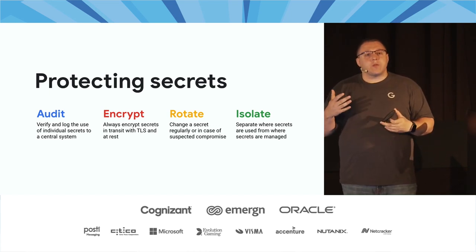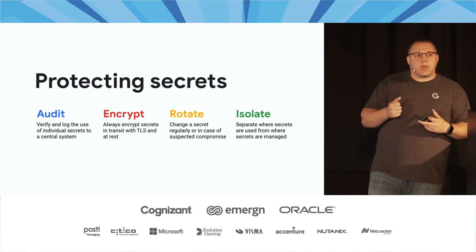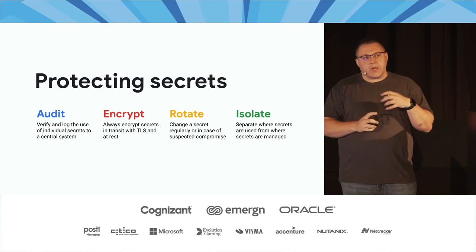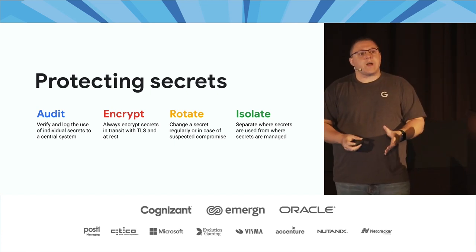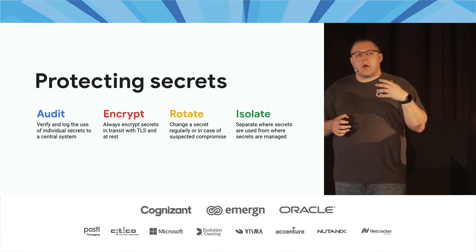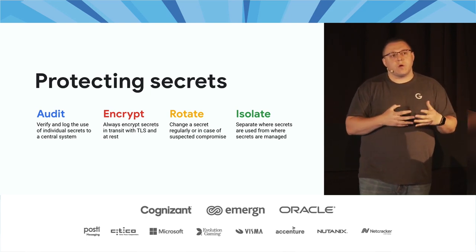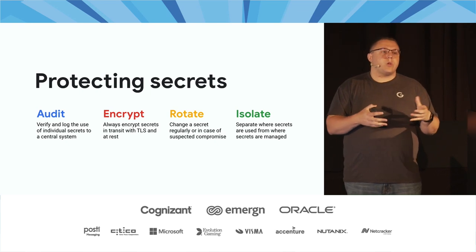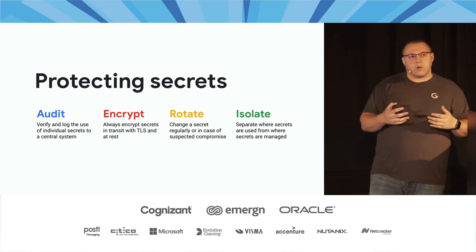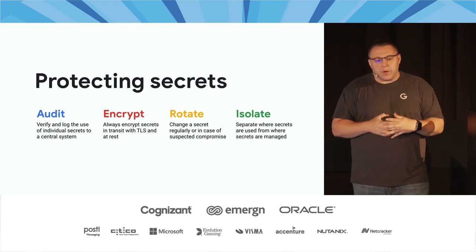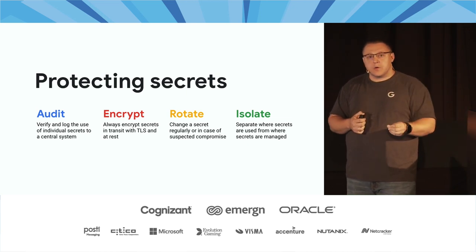The third way we protect secrets is by limiting their lifetime. We want to rotate secrets very frequently, as much as the applications and services allow. Changing a secret regularly — or in the case of a suspected compromise — reduces our attack surface. With cloud computing today and the way GPUs are moving, it's very feasible for an attacker to brute force a 20 to 30 character password or API key. So rotate continuously to protect against brute force and timing attacks.